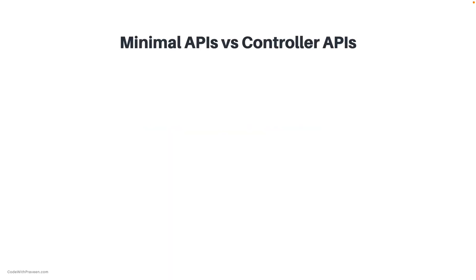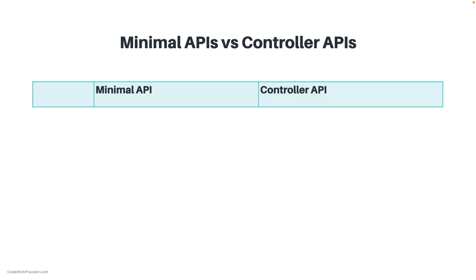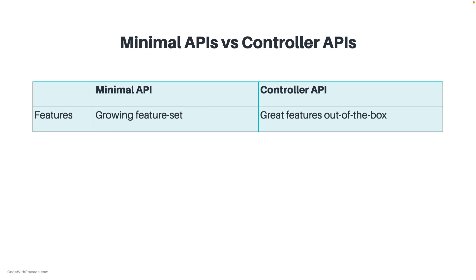When it comes to the differences, we can group them into various categories. First, let's look at the feature set. The minimal API has a growing set of features — currently the feature set is a bit limited, but features are being actively added to minimal APIs. Controller APIs, on the other hand, come with an extensive set of features out of the box.